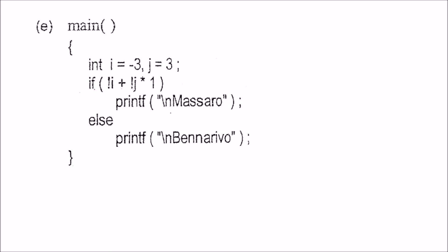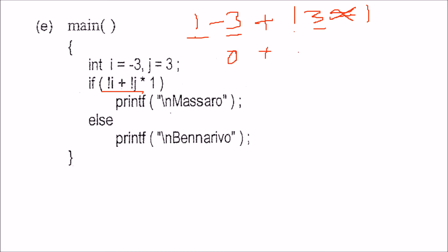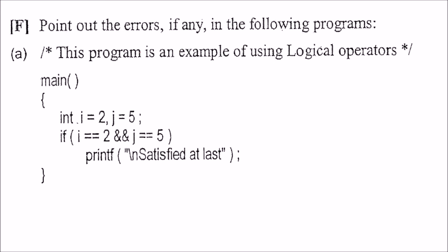For NOT i plus NOT j times 1: i is -3, j is 3. NOT(-3) — since -3 is non-zero it is treated as true, so NOT gives 0. NOT(3) similarly gives 0. 0 times 1 = 0, plus 0 = 0. Since the condition is 0 (false), that if-block will not execute; you get 'banar evo'.